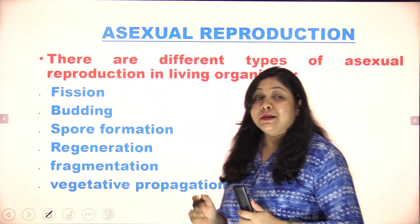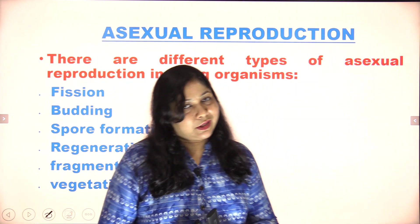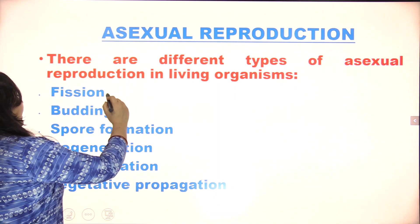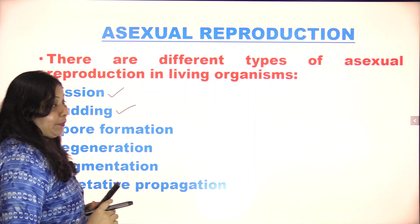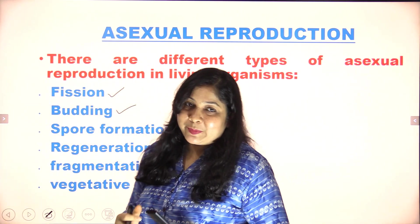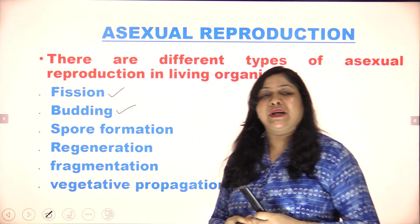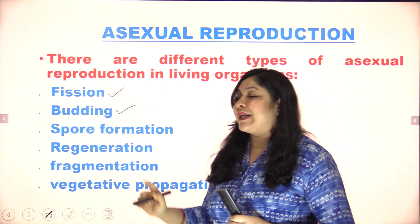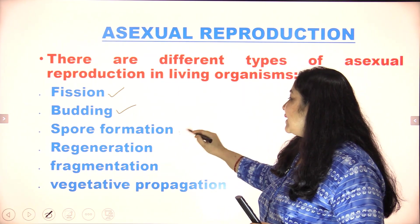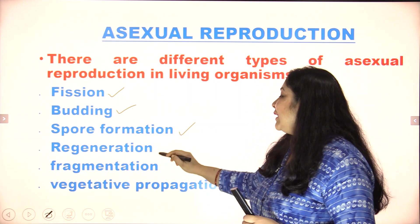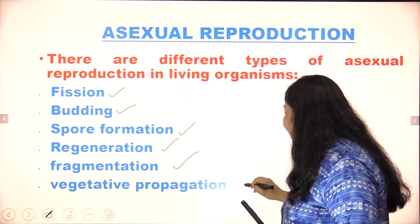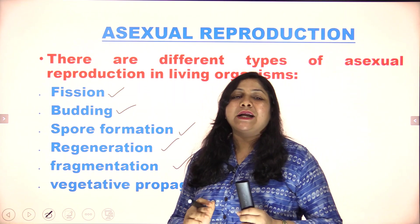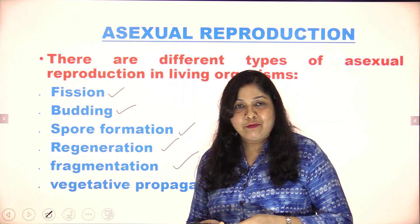What are the types of asexual reproduction? The first one is fission, second is budding, third is spore formation, after that regeneration, fragmentation, and vegetative propagation. We will study all these types of reproduction one by one.